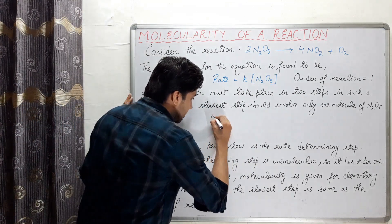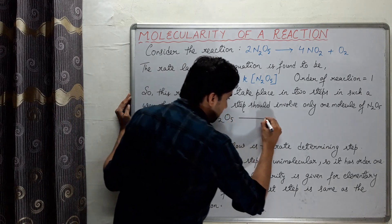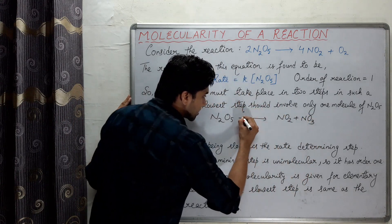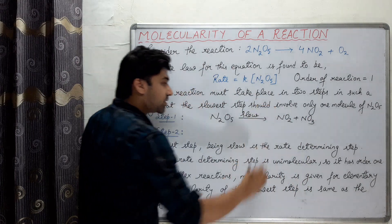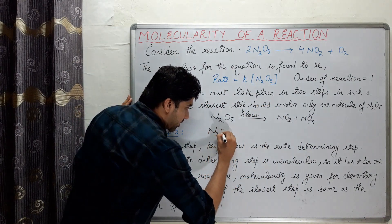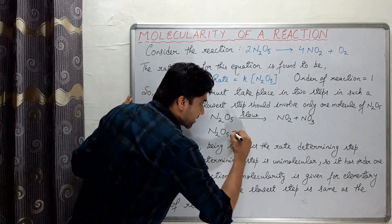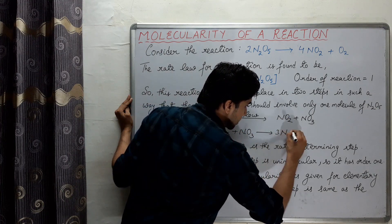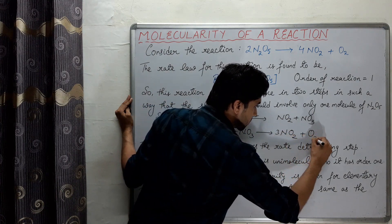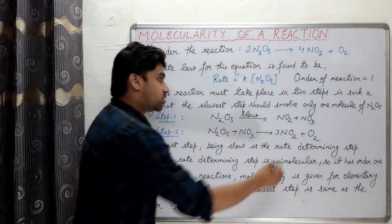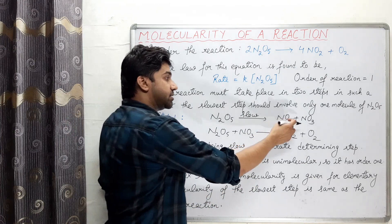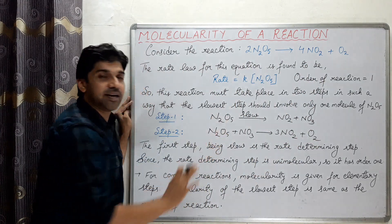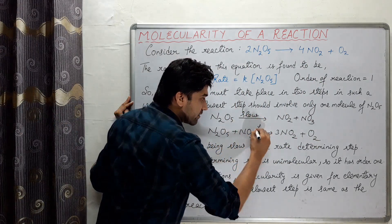The first step is: N2O5 decomposes into NO2 and NO3 — this is the slow step. The second step is: N2O5 collides with NO3 to form 3NO2 and O2. Adding the two steps, NO3 cancels, giving overall 4NO2 and O2 from two molecules of N2O5.